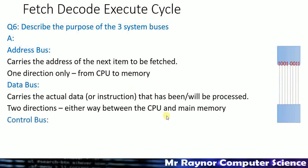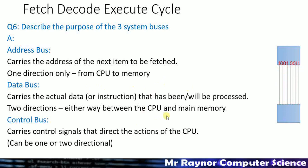The control bus carries control signals that direct the actions of the CPU. Think of it as coordinating everything — it sends signals to components to get them to function at the right time, telling them whether they're loading or saving. The key definition is that it sends control signals that direct the actions of the CPU. It can be one-way or two-way depending on what it's doing.